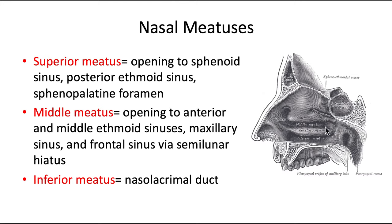The middle meatus houses openings to the anterior and middle ethmoid air cells, the maxillary sinus, and the frontal sinus — all via an opening called the semilunar hiatus, which is really good to remember for the board exam. A helpful mnemonic: 'I took a hiatus in the middle of the week,' which helps you remember it is in the middle meatus. The inferior meatus houses the opening of the nasolacrimal duct.